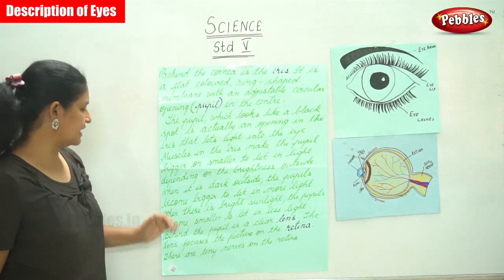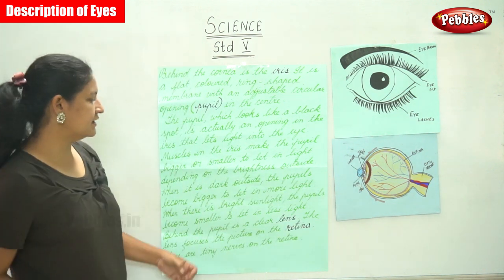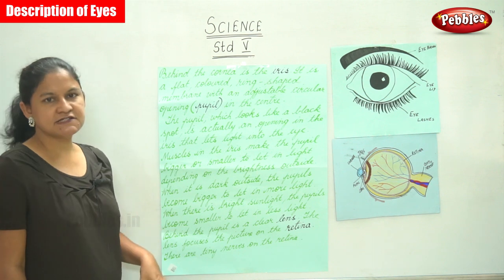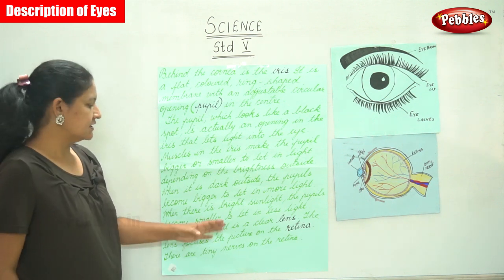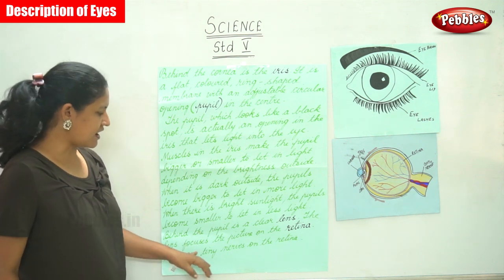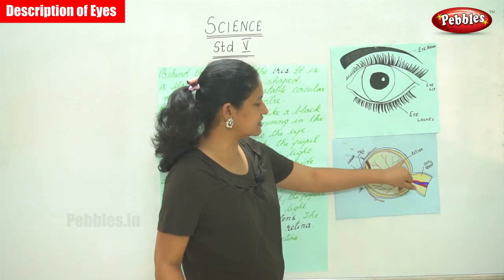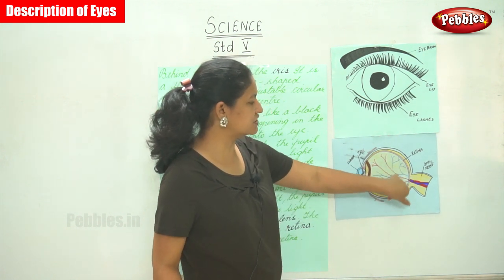Behind the pupil is a clear lens. The lens focuses the picture on the retina. There are tiny nerves that are present on the retina. If you have a look at the picture, you will find tiny nerves present on the retina.